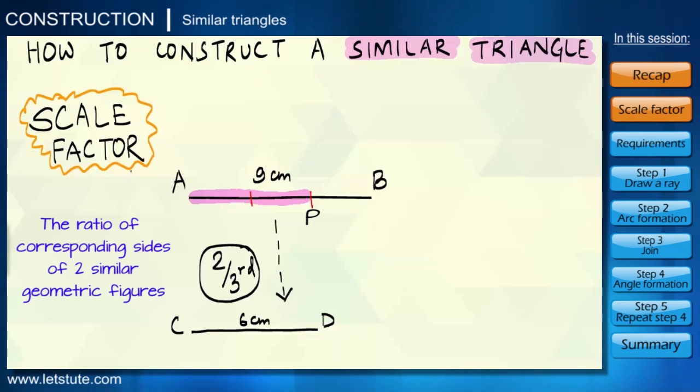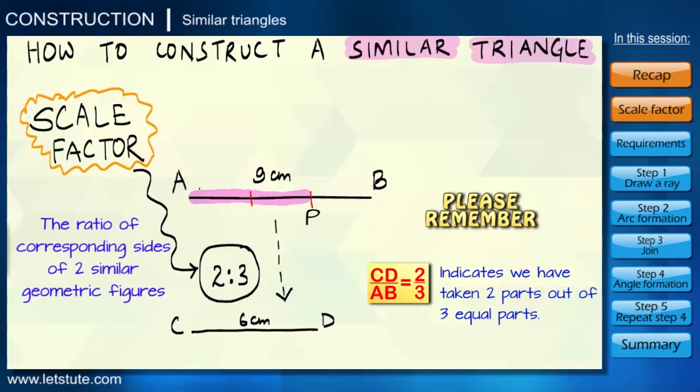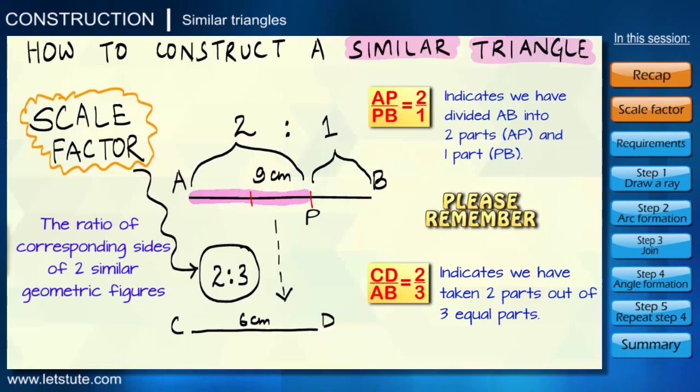Thus we say AB has been scaled down to form CD by a scale factor of 2 is to 3. But did you notice, when we consider two equal portions, the line segment AB actually gets divided in a ratio of 2 is to 1. So this is where we have to be careful - we should not make any mistake while dealing with these two kinds of ratios, because scale factor only indicates the size, whereas the other one is only a dividing ratio.